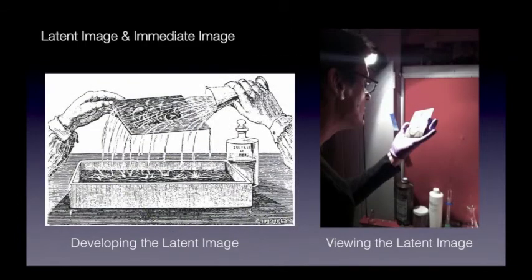What people hadn't factored in was the latent image. When light-sensitive material is exposed to light, a chemical change happens, but this change isn't necessarily visible. This idea is perhaps part of why early photographers and early viewers of photographic images had a hard time with the concept of the latent image, yet it was one of the most important components of the technology of photography in its infancy.